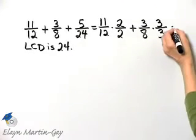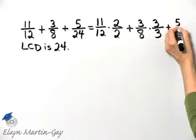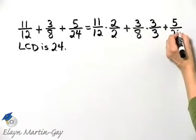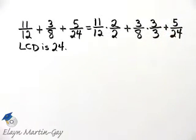And then plus 5 over 24, that already is a denominator of 24, so we'll leave that alone.